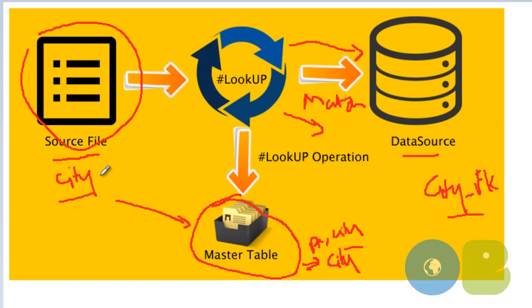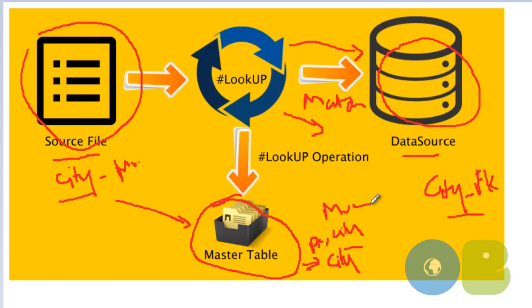Whatever data column is matching, the lookup component will match it and give you the necessary column you want in your destination. For example, if my city is Mumbai and my city master table also has Mumbai with a primary key of 1, the lookup component matches them and returns that value 1 as the matching output to the destination table. This is the working process of the lookup component.